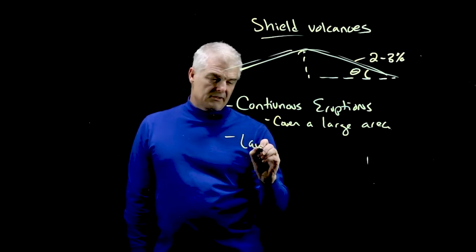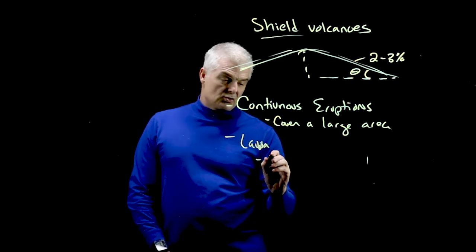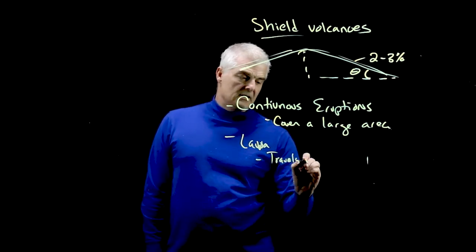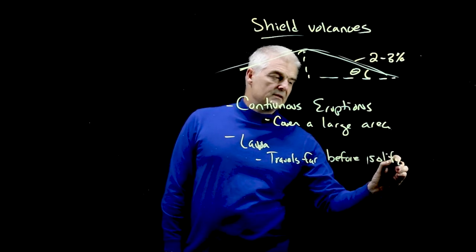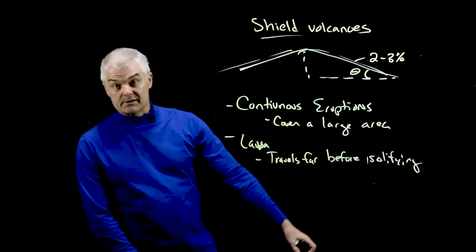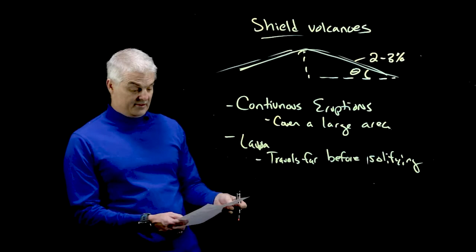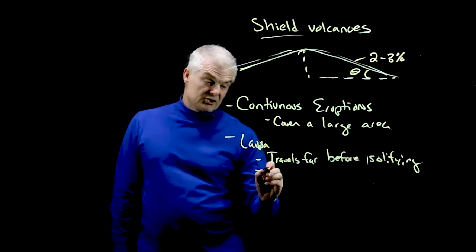But what are some other characteristics of shield volcanoes? The lava, we're talking about the lava here, it travels far before solidifying. So it goes a long, long way. Sometimes it hits the ocean. That's awesome by the way.